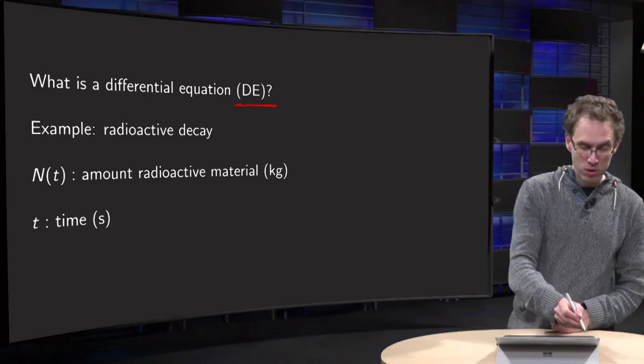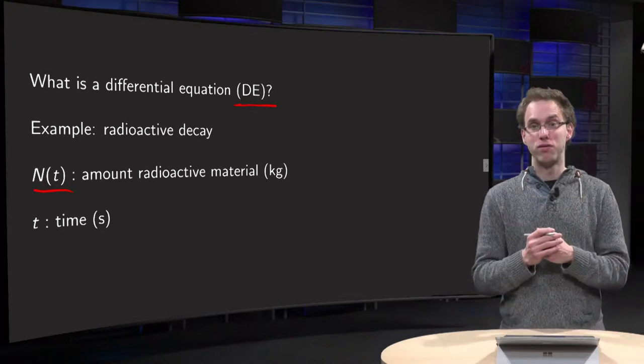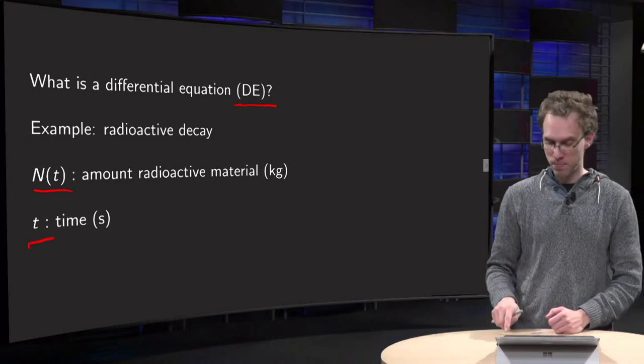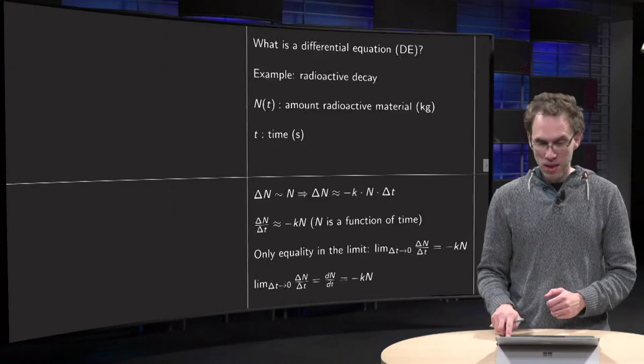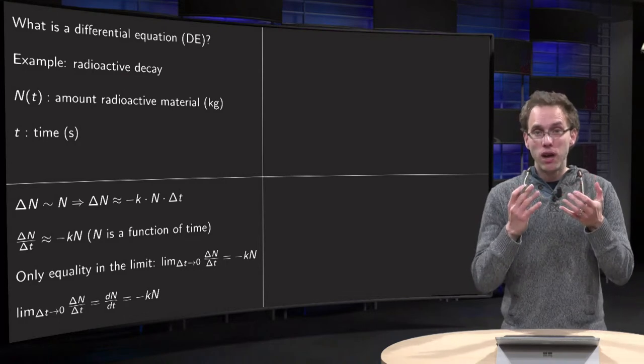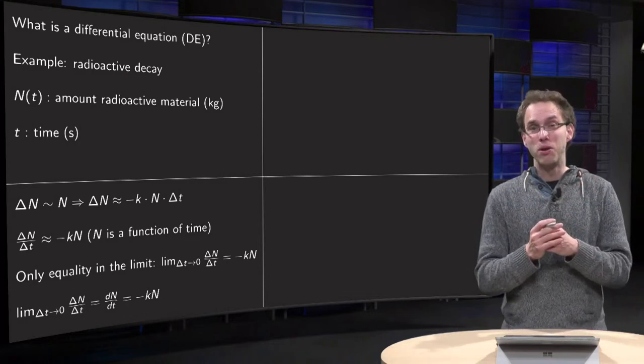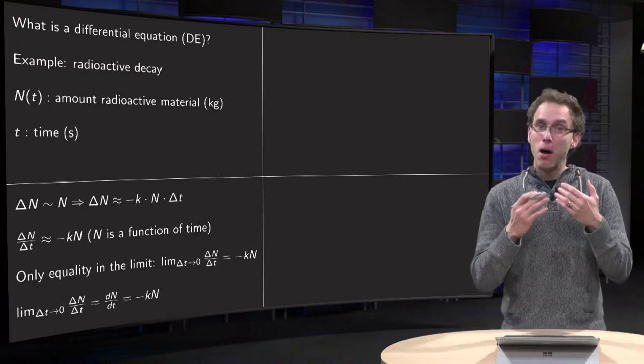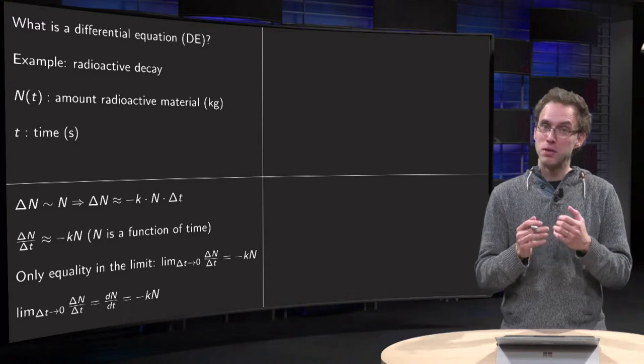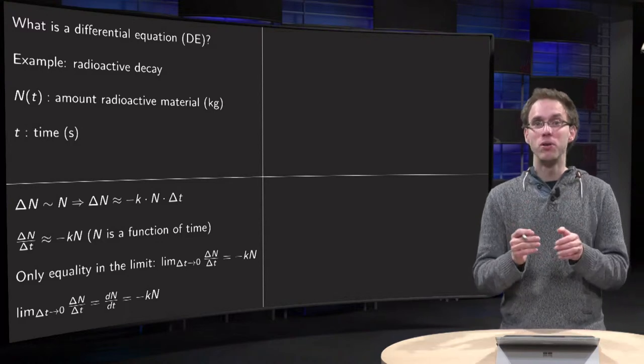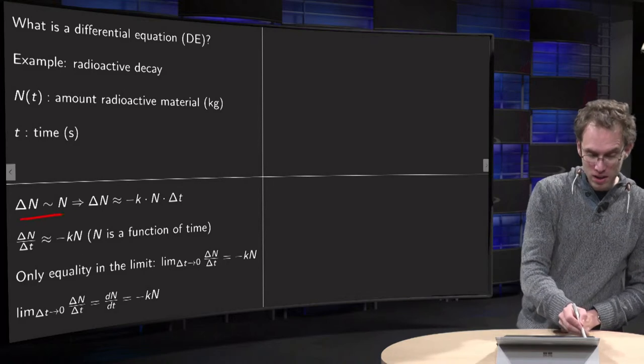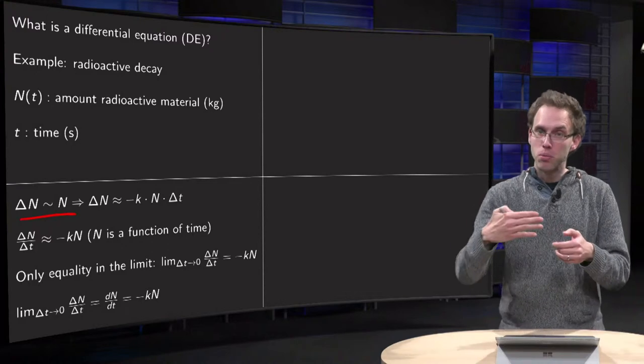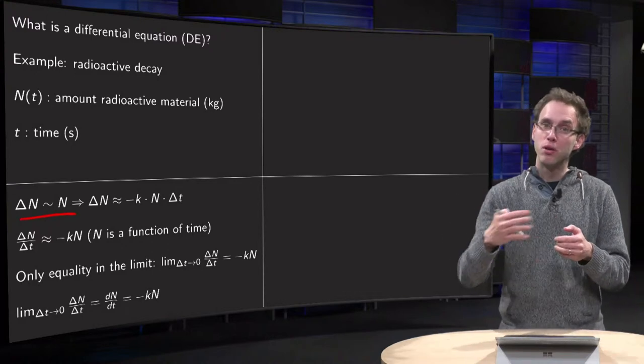Suppose we have some quantity N(t) of radioactive material given in kilograms, and we measure time in seconds. Now, a radioactive atom will decay with a certain probability. So the total amount which decays of the material is proportional to the amount of material you have. So, delta N, the amount you lose, is proportional to N. Because the more material you have, the more will decay.